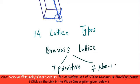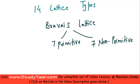Let me just write it down for you: 7 are primitive and 7 are non-primitive. Now let's see what are these 14 lattice types, or 14 types of unit cells, based on the lattice parameters.